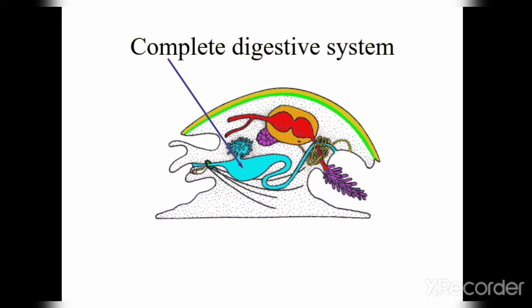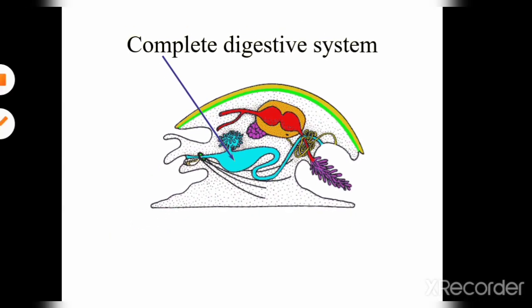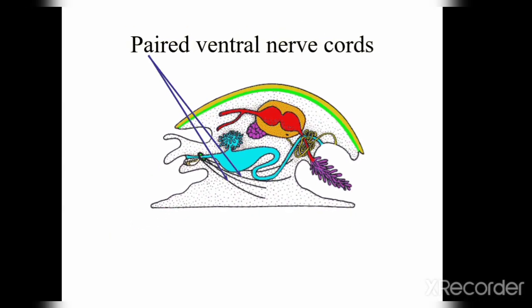Regarding their nervous system — as you can see in the diagram — they have paired ventral nerve cords. These nerve cords are positioned ventrally, which is why they are called ventral nerve cords. They arise from the brain, and these nerve cords are distributed throughout the entire body.